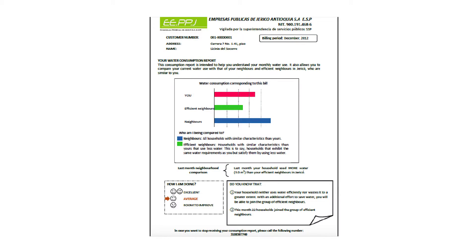Households in the treatment group received a personalized report about their water use and how it compared to their neighbors' water use. They also received a message that encouraged them to conserve water. This is an example of the information received in graphical form. The figure shows each household its own water use, the water use of efficient neighbors, and the average water use of all neighbors. These social norm reports were delivered to treatment households each month for one year, starting in January 2013.